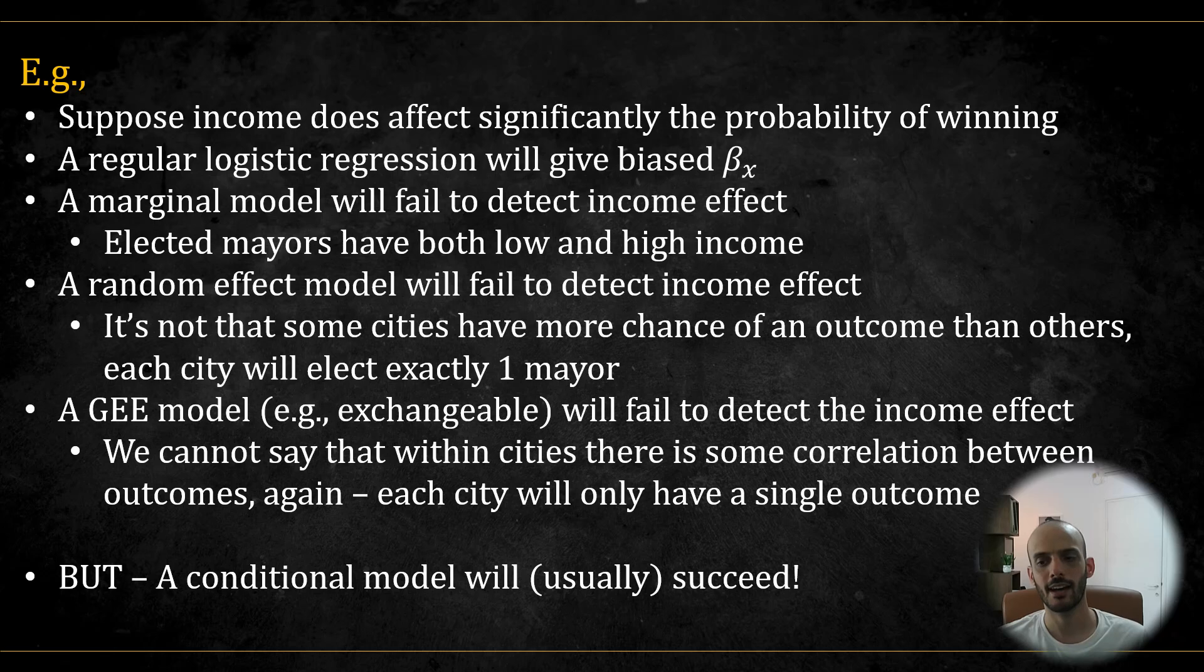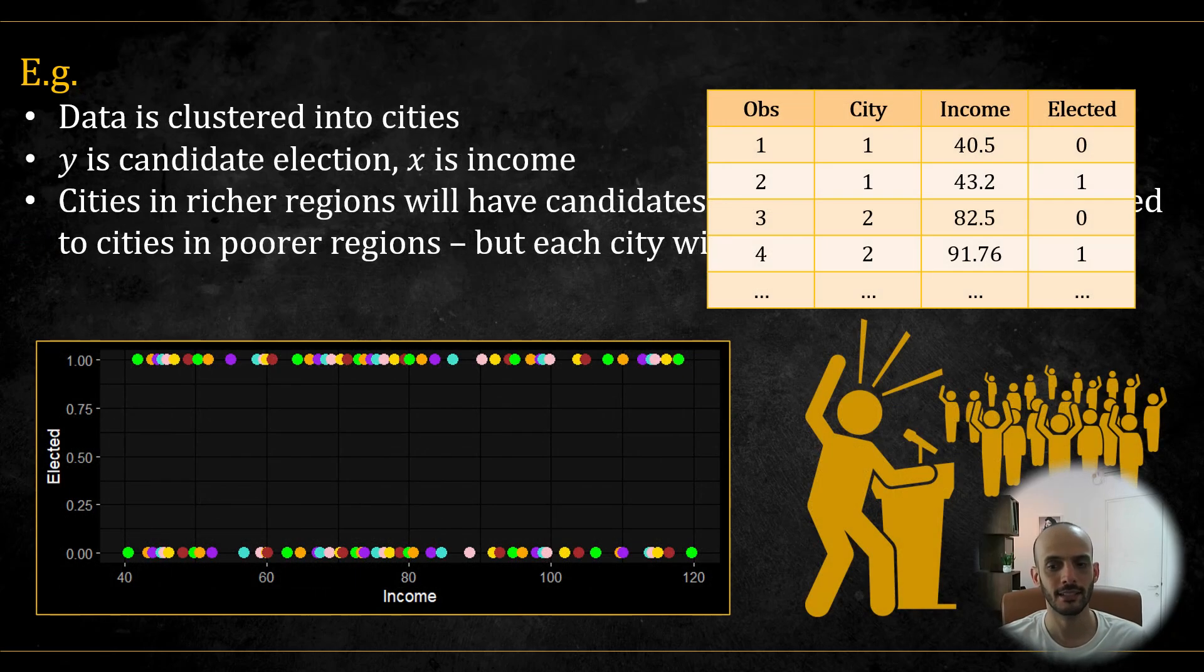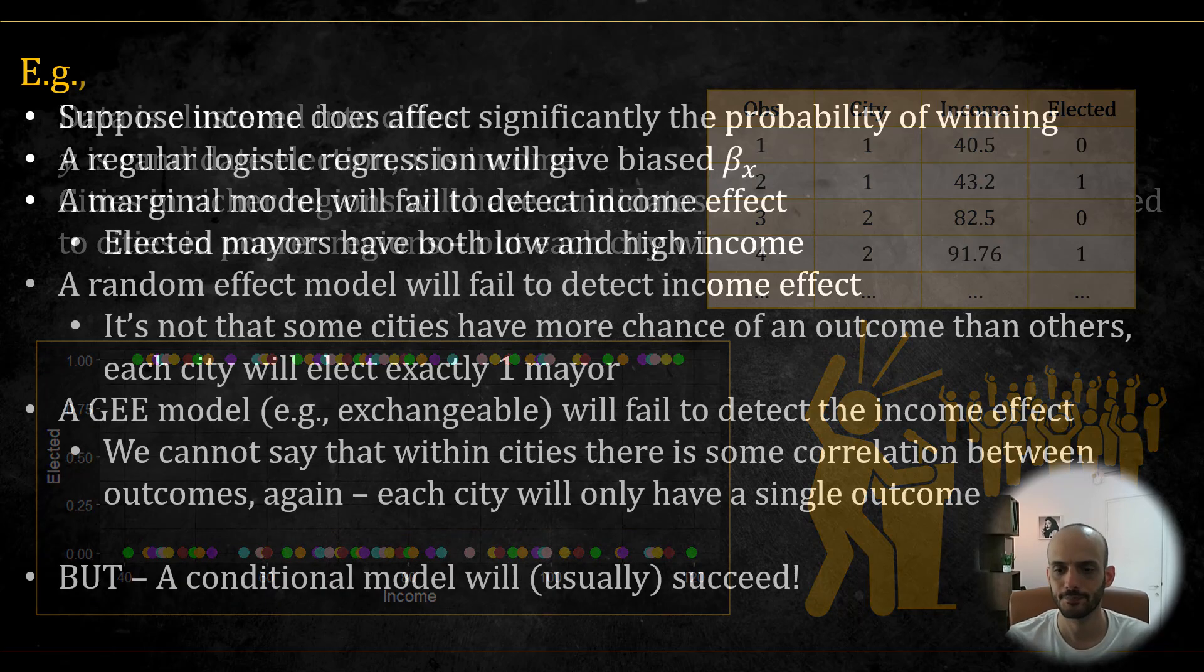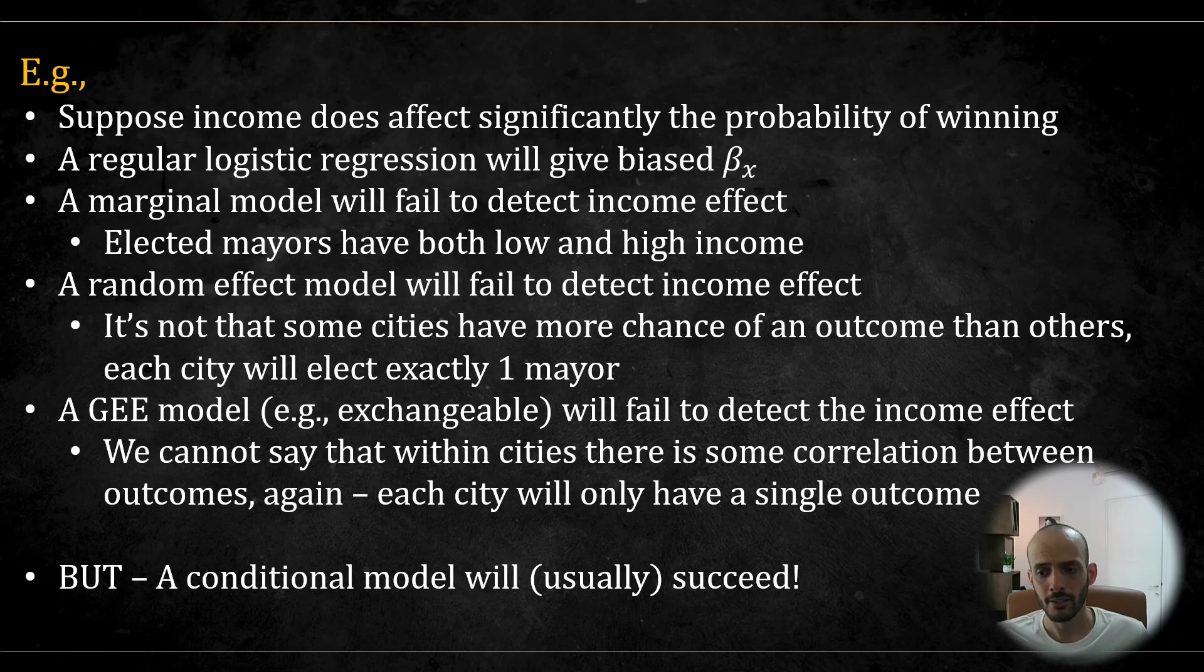Now suppose that income is significant. That is that candidates with higher income have higher probability of being elected. In this case, a regular model, treating cities as a fixed factor, will produce a biased coefficient estimate as we saw before. A marginal model, meaning a regular logistic regression that ignores the groups, will fail to detect the income effect because among the elected candidates, there are both low and high income individuals. We see that the range of income is about the same for the elected and the non-elected. So a marginal model will also fail.